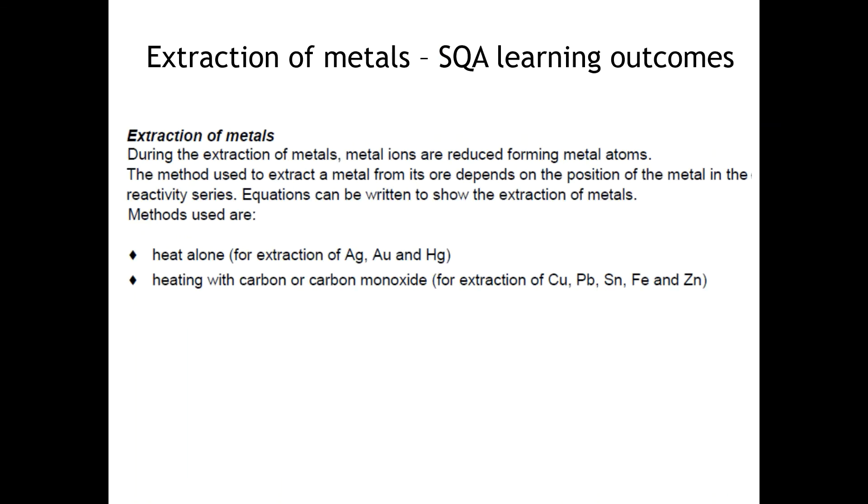These are the learning outcomes covered today. During the extraction of metals, metal ions, like in an ionic compound, are reduced in a reduction reaction to form metal atoms. The method used for extraction depends on its position in the series. You need to be able to recognize an equation showing the extraction. The methods we looked at today were heat alone for the extraction of silver, gold, and mercury, or heating with carbon or carbon monoxide for the extraction of copper, lead, tin, iron, and zinc.